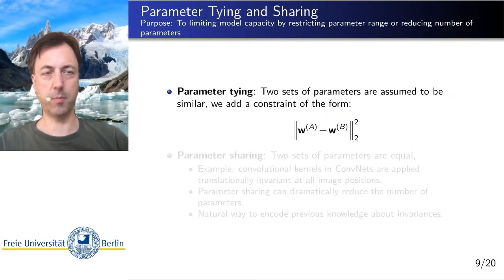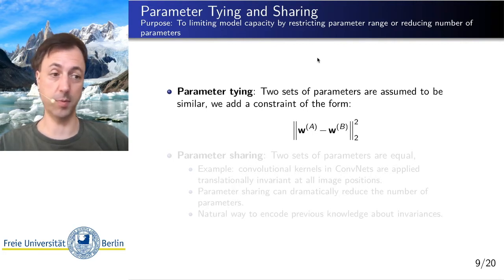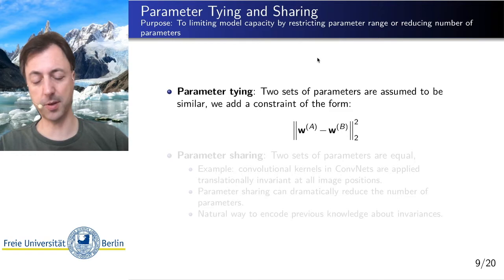Another very important class of regularization methods is parameter tying and sharing. So basically, we are limiting the capacity or expressiveness of a function or a model by restricting the parameter range that can be assumed. And in the slides before, we did that by adding some norm penalty on the size of the parameters. But here, this is about making certain parameters similar or the same.